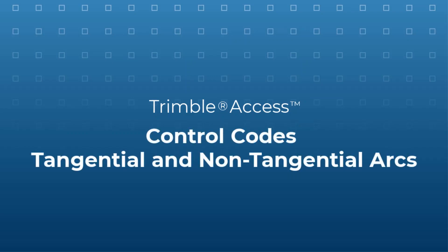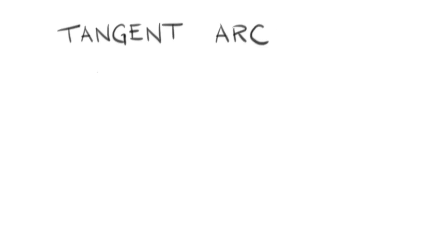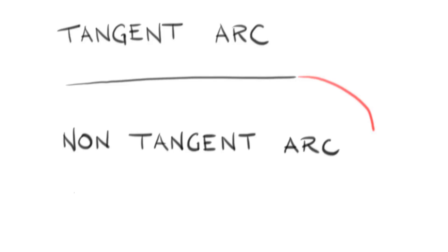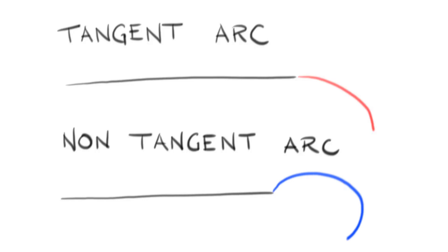In Trimble Access we have two different types of arcs: tangential and non-tangential. A tangential arc starts in the same direction as a line and can only be drawn between two points. A non-tangential arc starts at a different direction from the incoming line and is a best fit arc through multiple points.